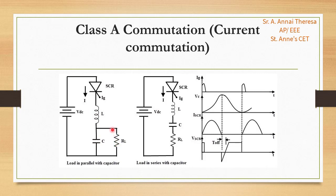If the current builds up through the SCR and completes the half cycle, then the inductor current will flow through the SCR in the reverse direction. This reverse voltage applied across the SCR will turn it off. After thyristor commutation, the capacitor will start discharging from its peak value through the resistor. The thyristor will remain in reverse biased condition until the capacitor voltage returns to the supply voltage level, at which point this SCR will be in the reverse biased condition. This is about Class A commutation.